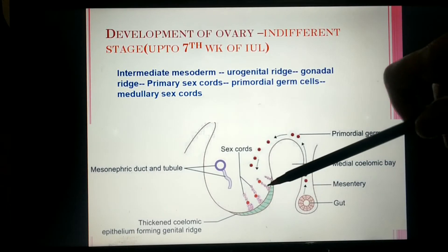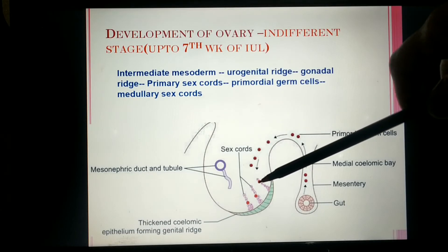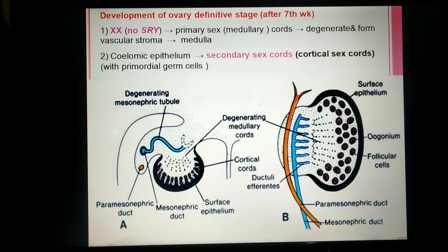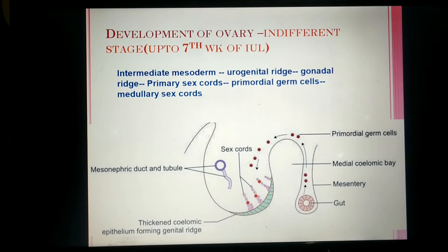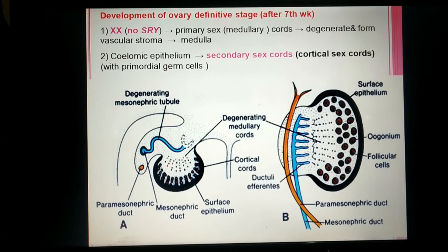Here we can see the hindgut and dorsal mesentery of the hindgut. This is the urogenital region, and on the medial side is the genital ridge. The pinkish structures are the sex cords, and the primordial germ cells are going into and becoming embedded in the sex cords. This indifferent stage lasts up to the 7th week of intrauterine life. Now we move to the definitive stage of gonad development, which occurs after the 7th week.